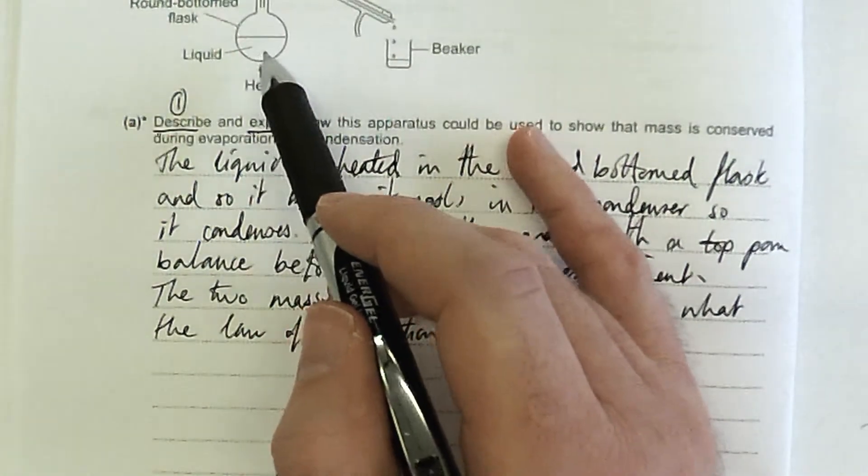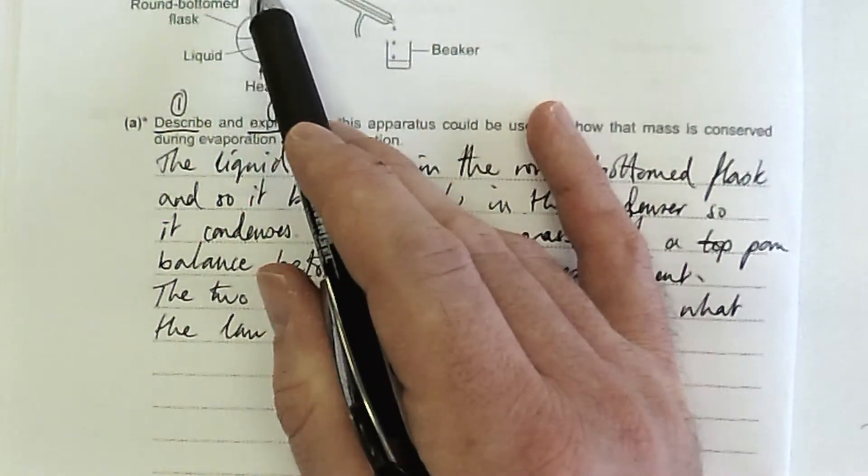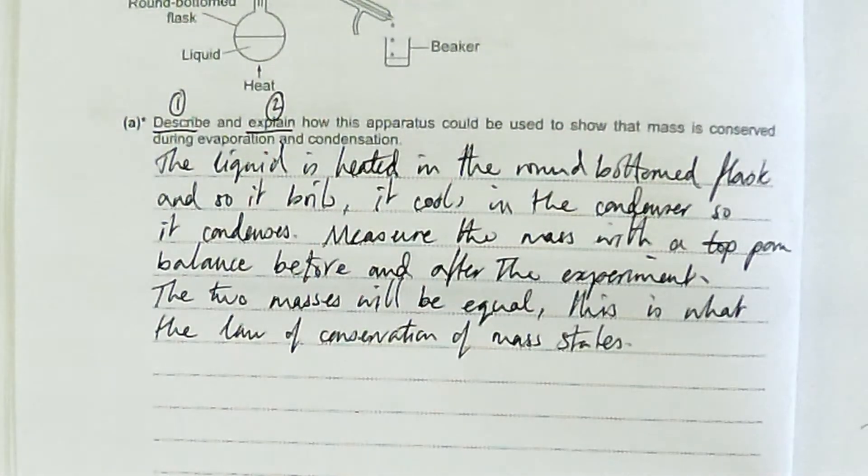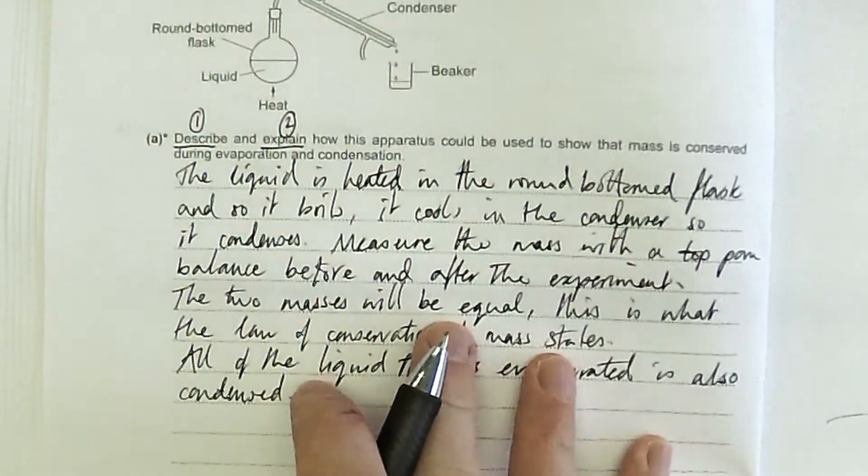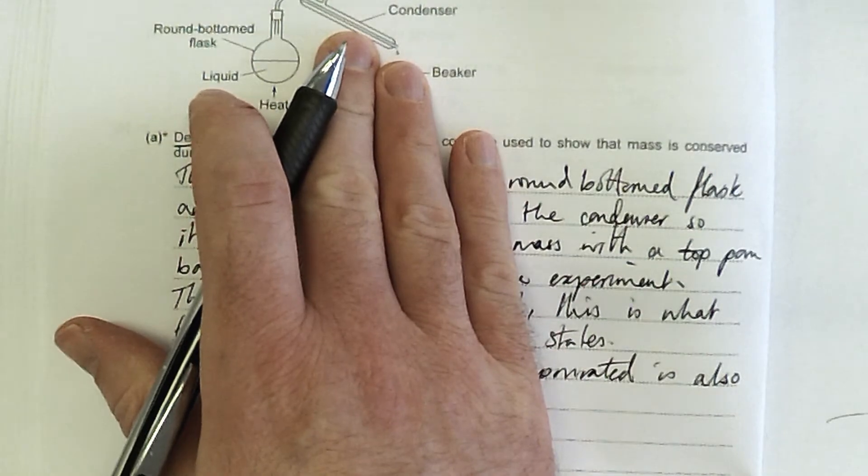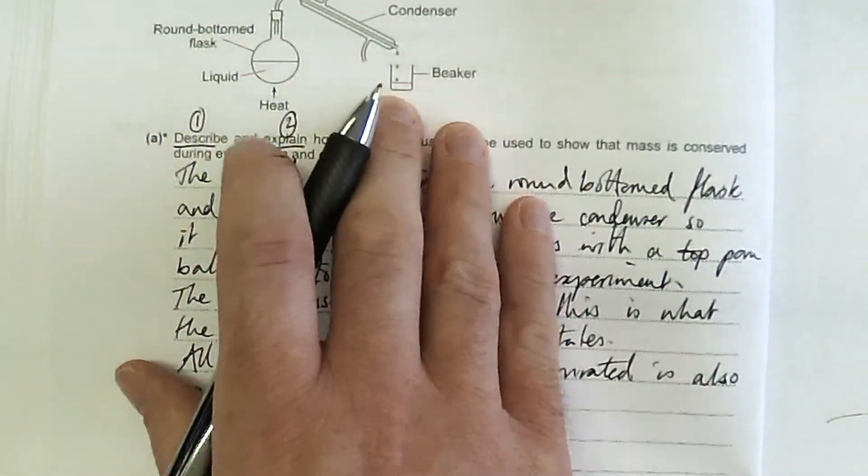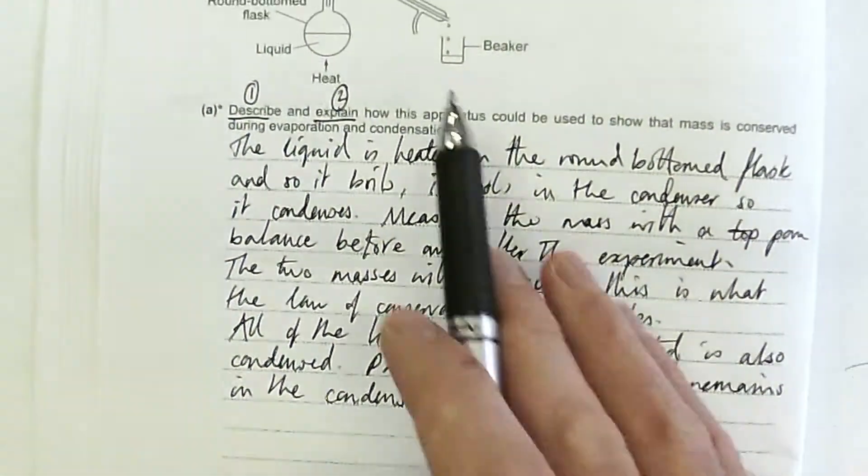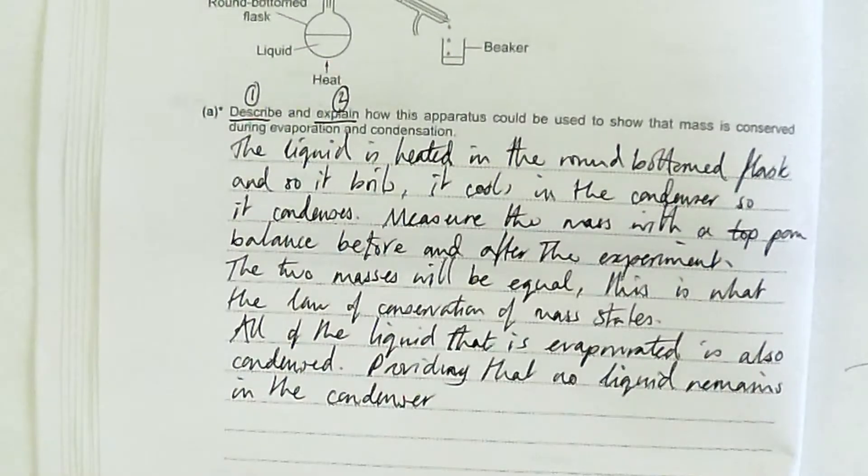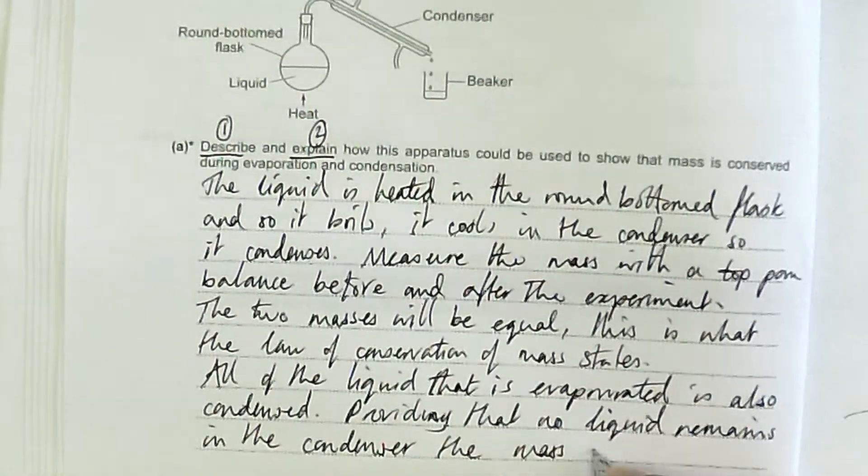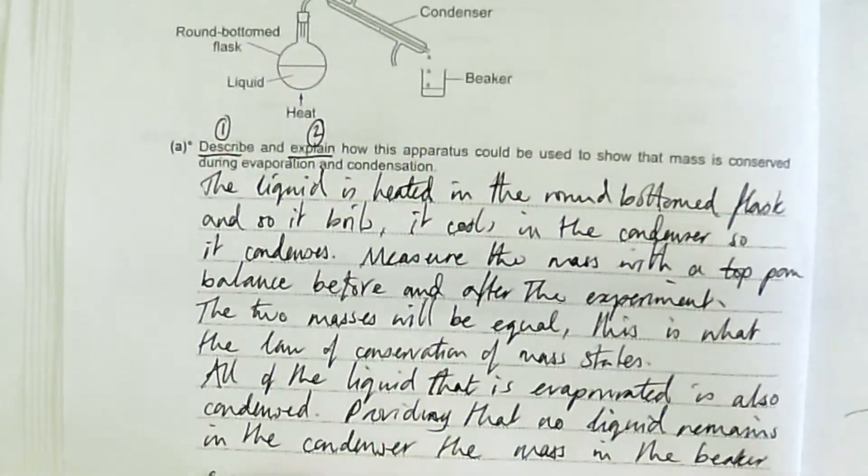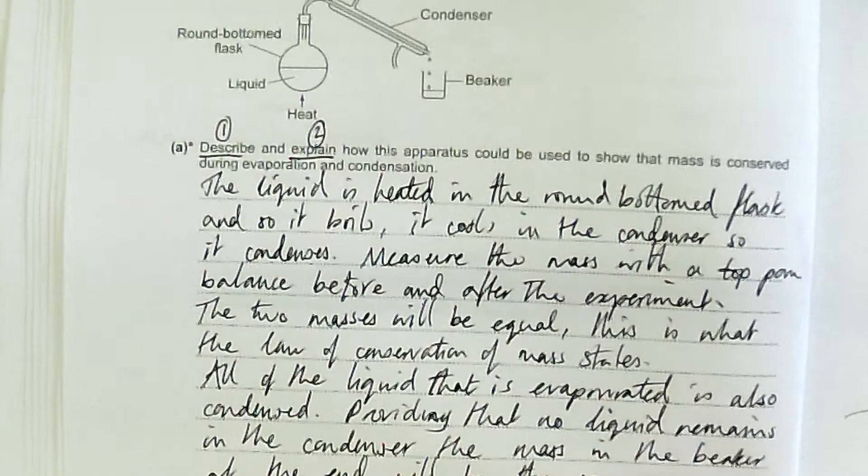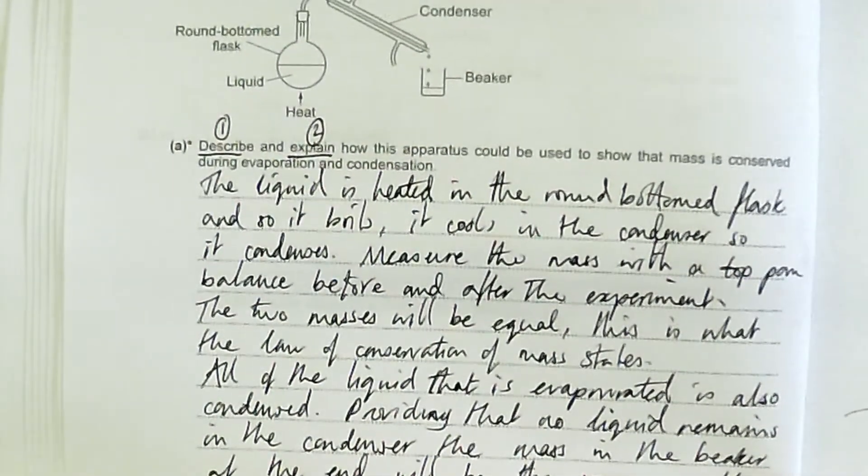This is because all of the liquid that was in the round bottom flask is then evaporated, and all of that evaporated liquid, that gas, is then condensed back into that same mass of liquid. Providing that there's no liquid trapped inside the condenser, there is going to be an equal mass in this beaker as started in the round bottom flask. The mass in the beaker at the end will be the same as the mass of liquid at the start.